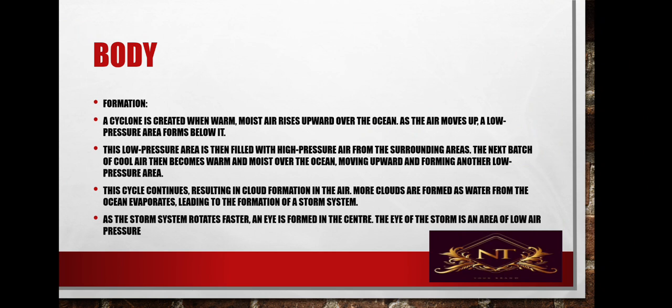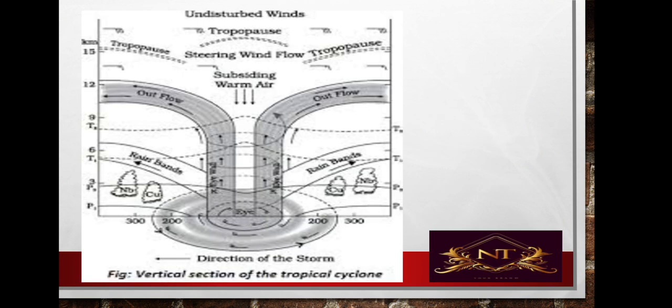Regarding its formation, a cyclone occurs when a region has high temperature, the presence of Coriolis force, and a lower pressure area. When temperature is high, air moves upward and heavier air from neighboring areas rushes in to fill the void, creating a low pressure region. This forms the eye of the cyclone, as you can see in the picture showing how the eye forms.